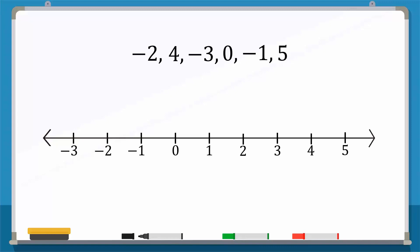We see that minus 3 from the given list is the leftmost, so it will come first as it is the smallest number, followed by minus 2, then minus 1, 0, 4,